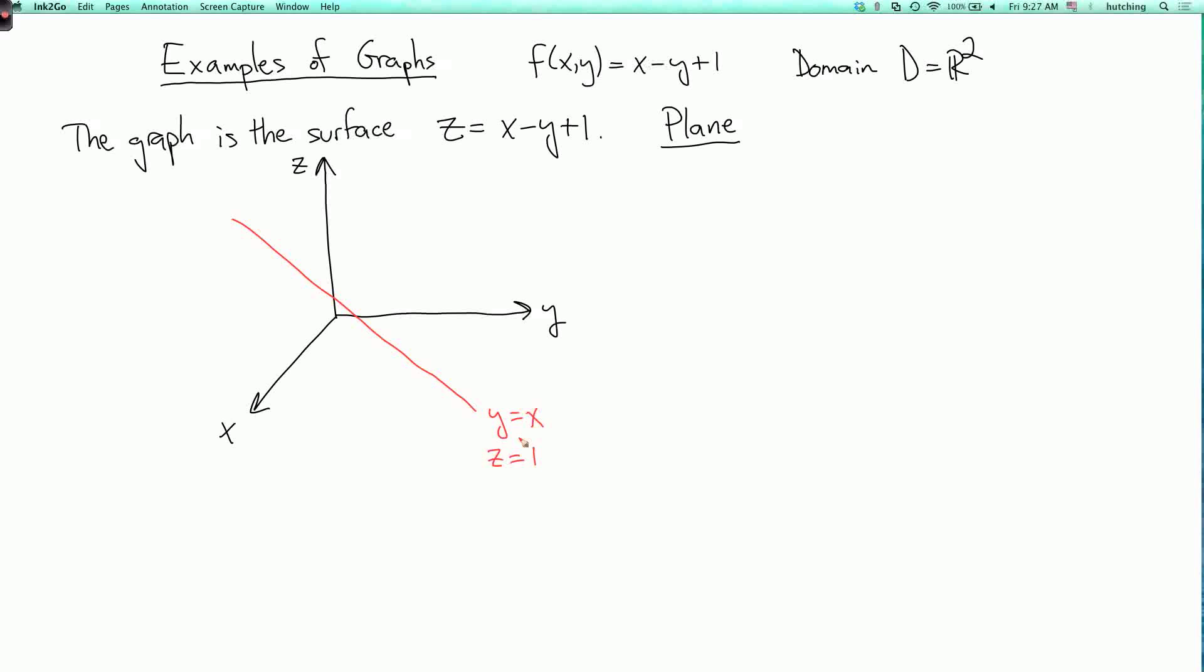Now, if y equals x plus 1, then z equals 0. So that's sort of down like this. So this is in the xy plane. In general, we get a plane sort of going down like this. This is not a very good drawing. It's a little hard to draw, because of course we always lose information when we project from three dimensions to two dimensions.